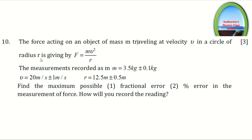Question 10 (3 marks): The centripetal force is given by F = mv²/r. The measurements are recorded as m = 3.5 ± 0.1 kg, v = 20 ± 1 m/s, and r = 12.5 ± 0.5 m. Find the maximum possible fractional error and percentage error in the measurement of force. How will you record the reading?